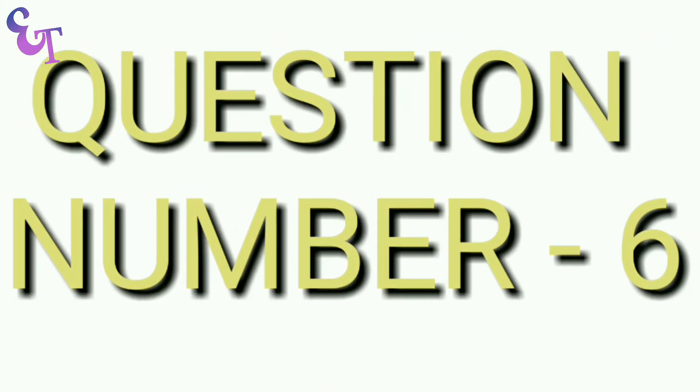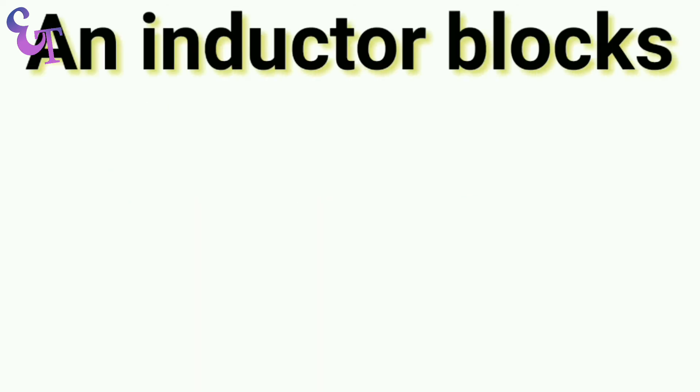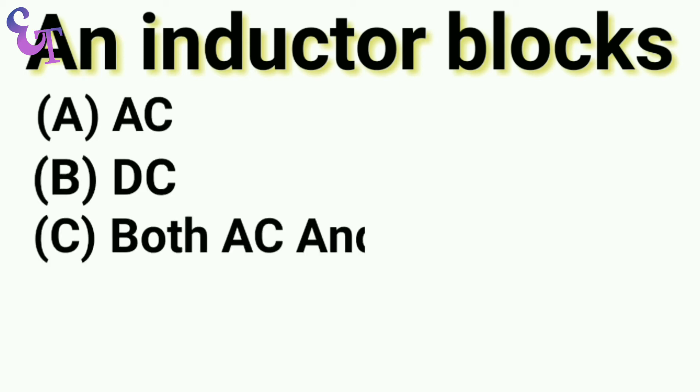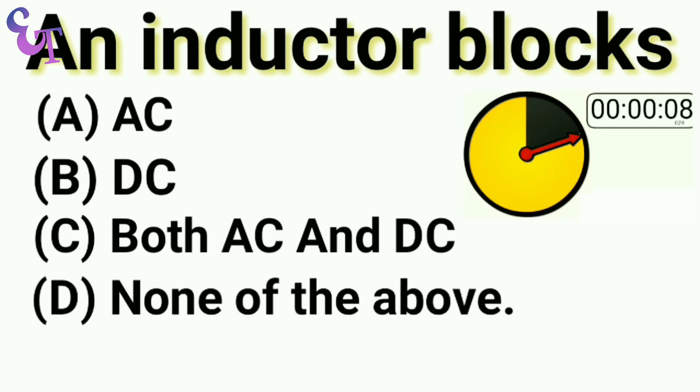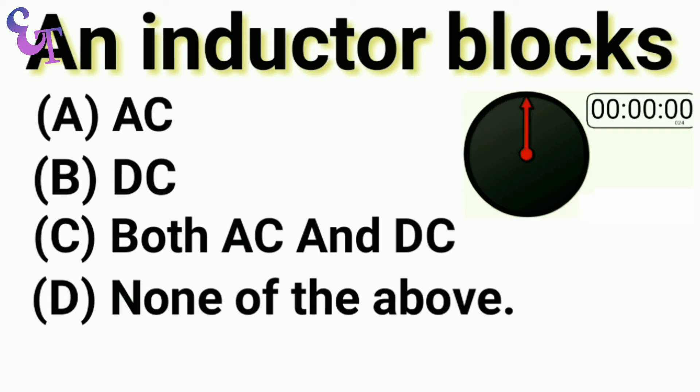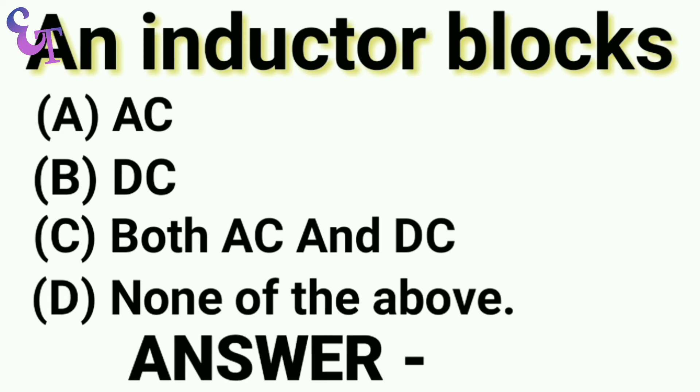Question number 6: An inductor blocks A. AC, B. DC, C. Both AC and DC, D. None of the above. The right answer is A. AC.